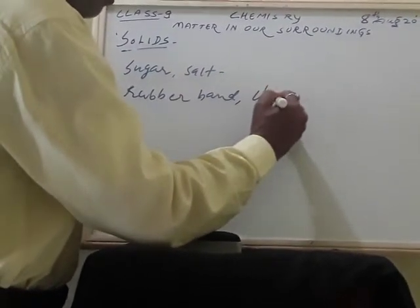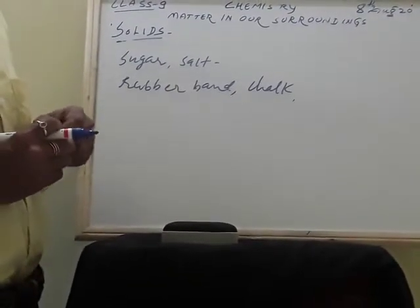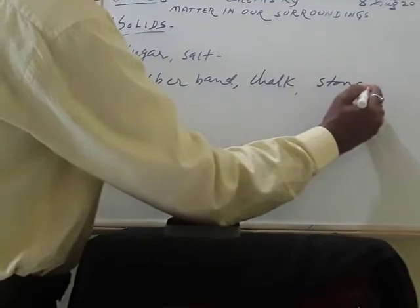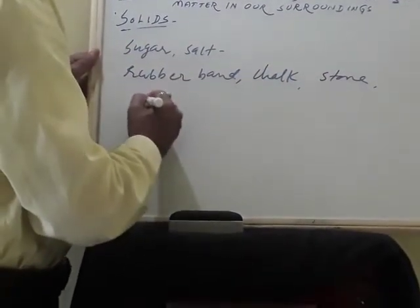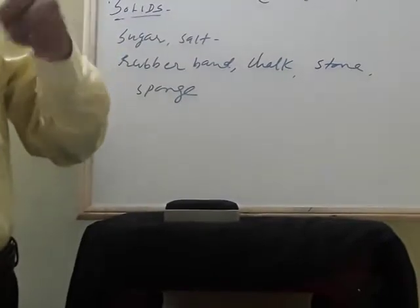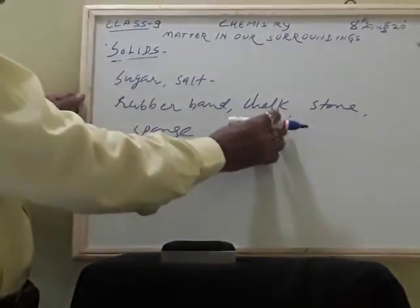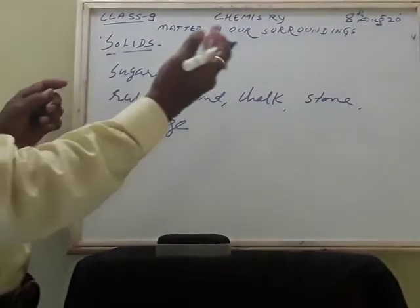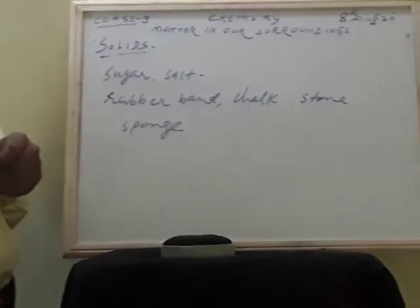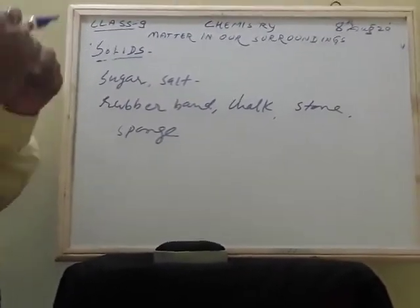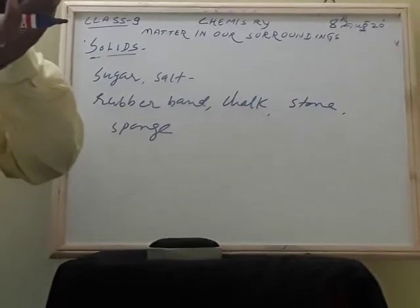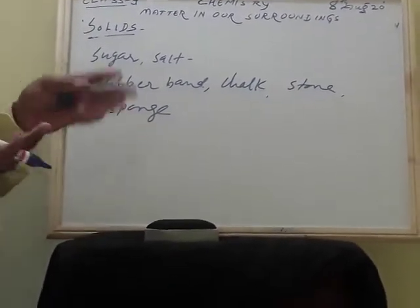If you take chalk, it is also a solid. But when you break it, it breaks, and when you hammer it, it converts into pieces. If you take a stone, all of these are solids, but they differ in the force of attraction between their particles. The rubber band and chalk have less force of attraction compared to stone, which is very hard and requires more force. Even sponge, though it looks very soft, has holes in it so that air is trapped. When you compress it, the air is removed and it becomes smaller. When you release it, it returns to normal. That is why sponge is also a solid.